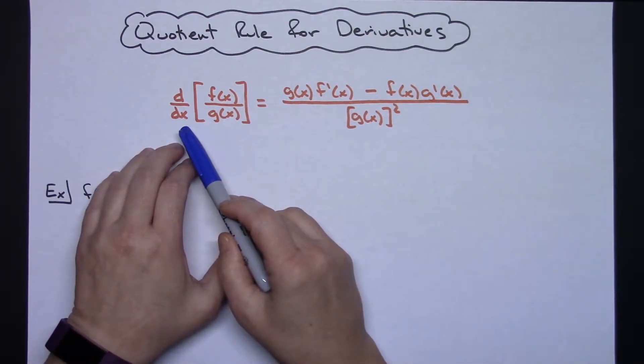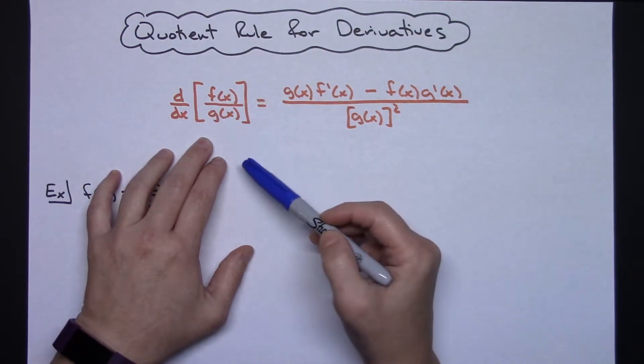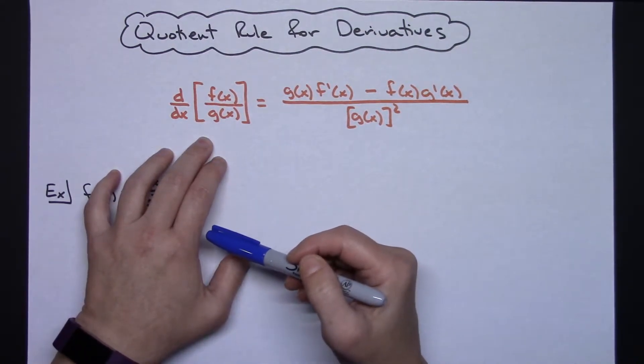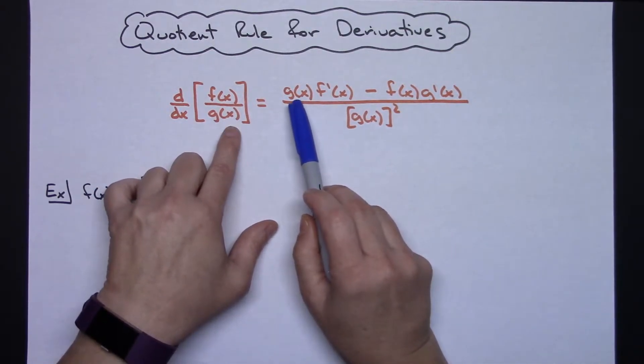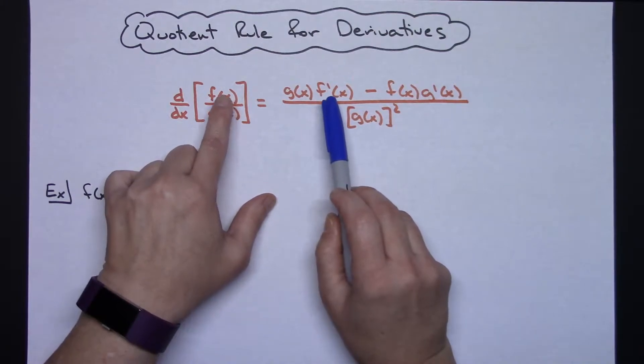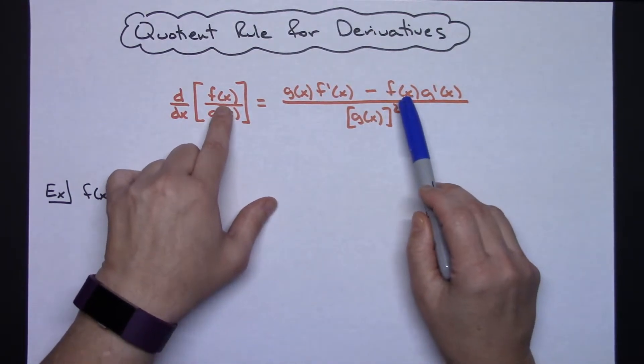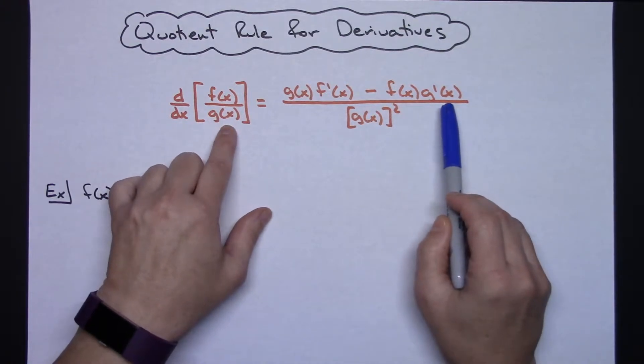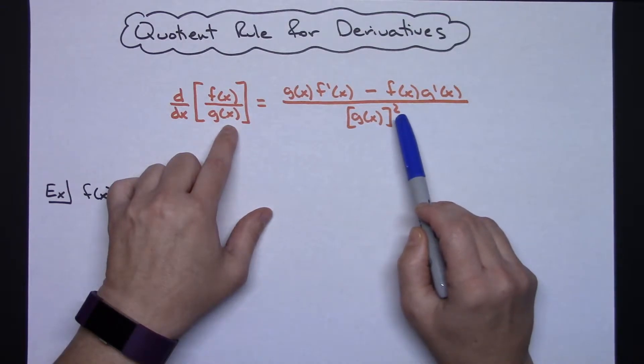We've got d/dx of f(x) over g(x). Alright, so quotient rule means I need to have a quotient to be able to do the quotient rule. The quotient rule states that you're going to take the bottom function times the derivative of the top, and then subtract the top function times the derivative of the bottom function, and then take the bottom function and square it.